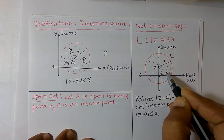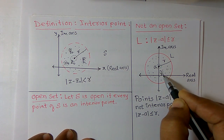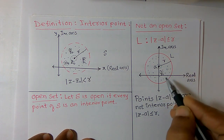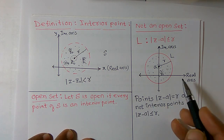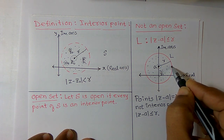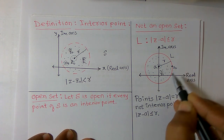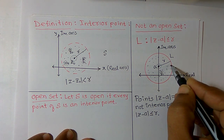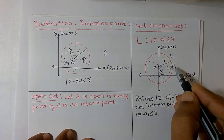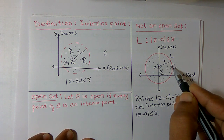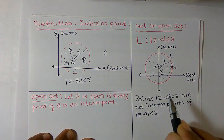I can verify many more points in the closed disk. For example, taking point z1, I can construct an open disk around z1 and all those points belong to l, so z1 is an interior point. Now consider a point z2 on the boundary. I can construct a small circle around z2, but observe that some points belong to the disk and some points do not belong to the disk.